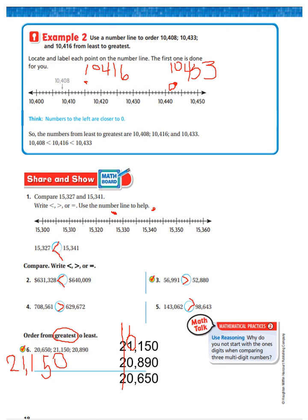Now, let's go to the hundreds. We have a 100, an 800, or a 600. Which is more? 100, 800, or 600? 800 is. So the next number would be 20,890. So the least number would be 20,650.